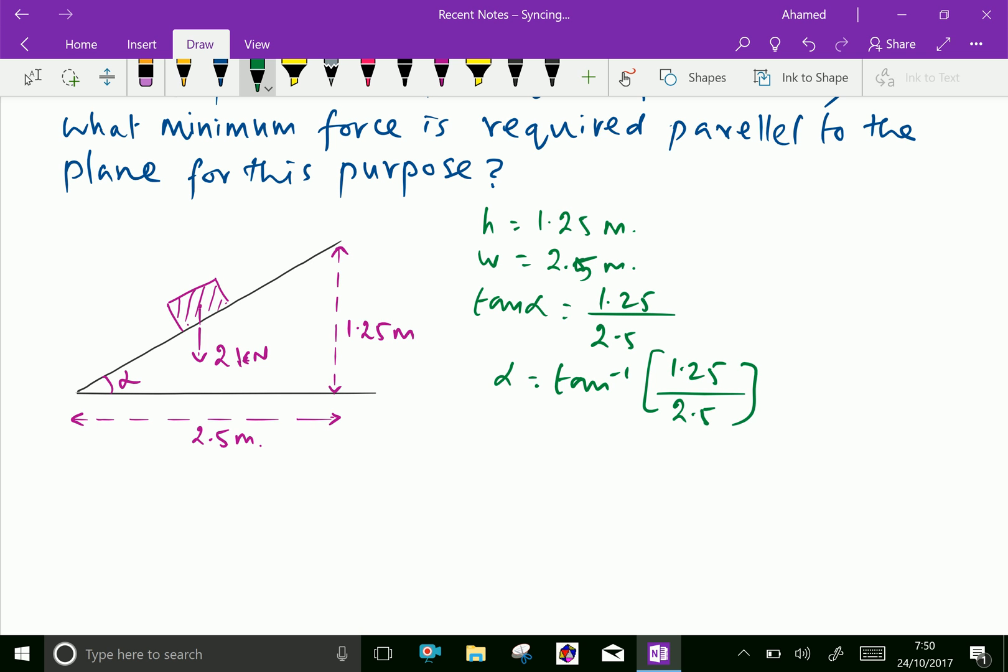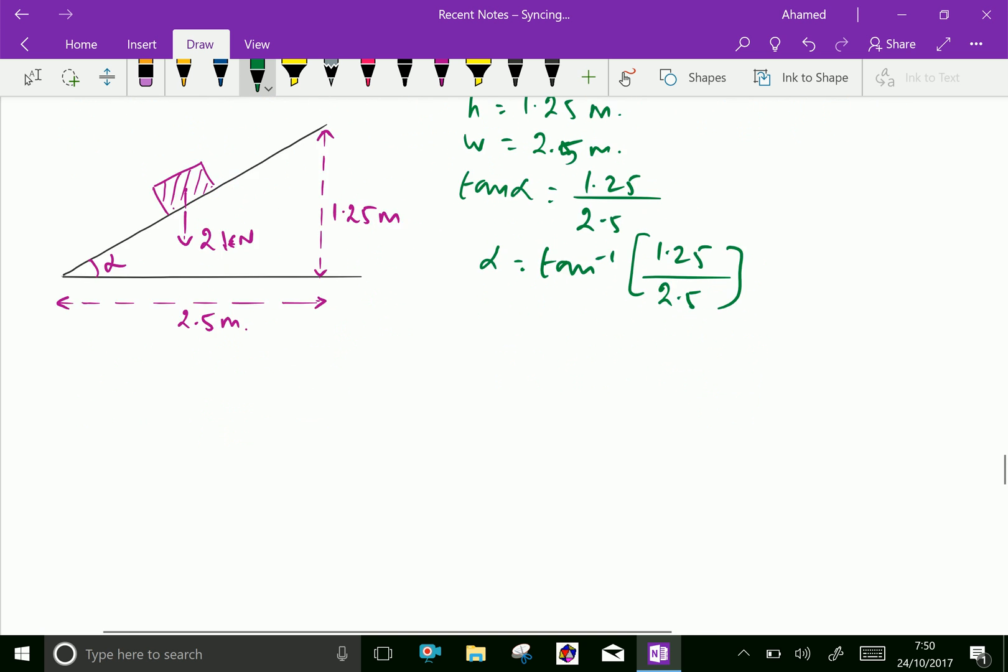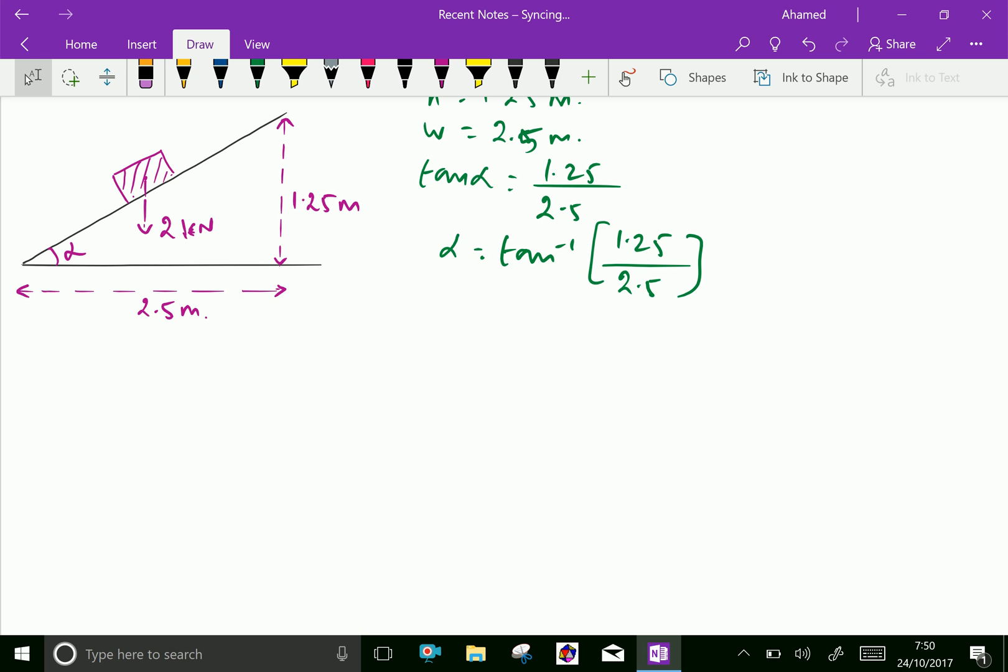Let us calculate this: tan inverse 1.25 over 2.5 equals 26.57. Alpha equals 26.57 degrees.